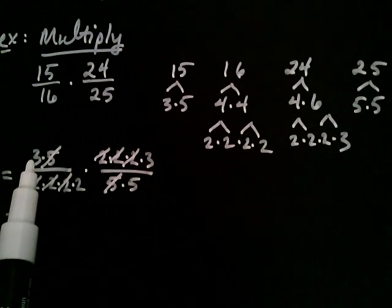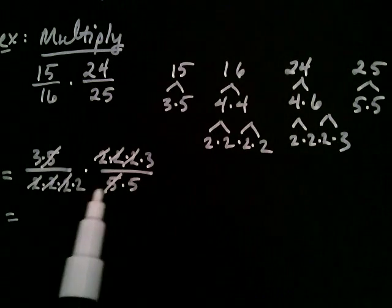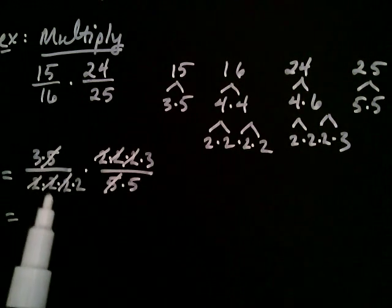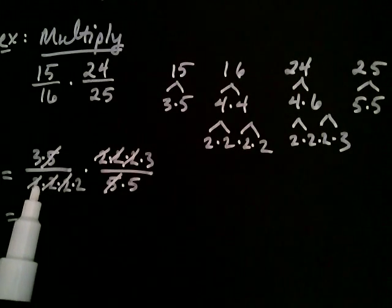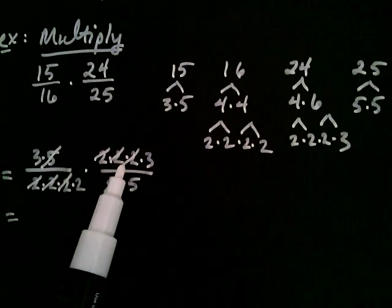Now you never cancel factors that are in the same either numerator or denominator. It's always a cancellation from the top to the bottom. And that cancellation can either be vertically or it can be diagonally. But we never cancel across.